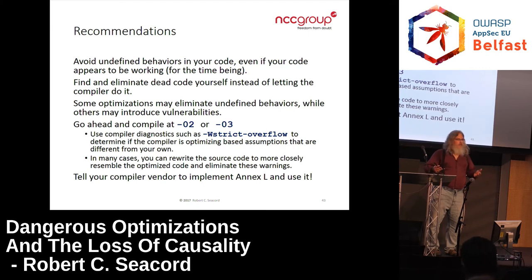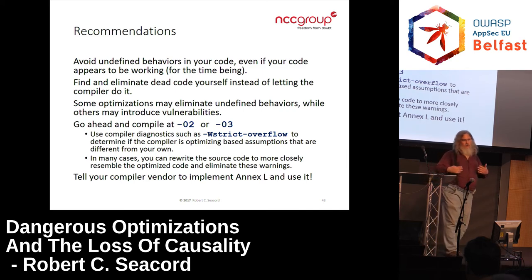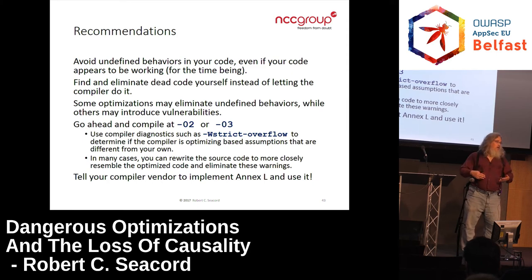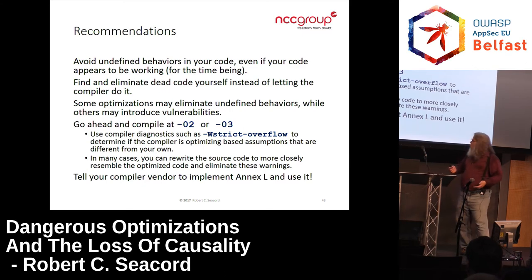A lot of security people, when they learn a little bit about this, think: 'we should enforce wraparound behavior.' Frankly, that's not the recommendation I would give. The reason is you're turning off all the optimizations — and many of those optimizations are fixing your code, while some are breaking it. Generally speaking, if you just turn them all off, your code is going to get worse in quality and security, and it's going to get slower at the same time. My recommendation is: build optimized code, but turn on the warning flag to find out where the compiler is doing these optimizations. If it's optimizing on an assumption that's different from your assumption, your assumption is wrong — revise your code.